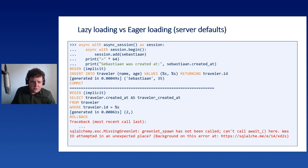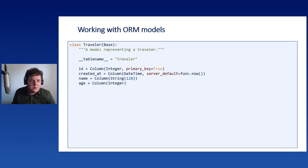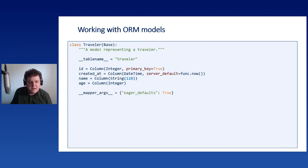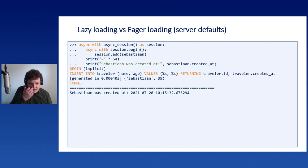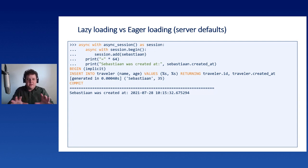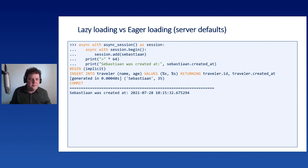The solution for defaults is to go back to your ORM model and add a mapper argument called eager_defaults. This means that when you create a new object, it will also return the value of the default created in the database. In the emitted SQL you'll see a RETURNING clause with traveler.created_at - the database sends back that information during object creation. Then the print happens without failure because the information is already available.